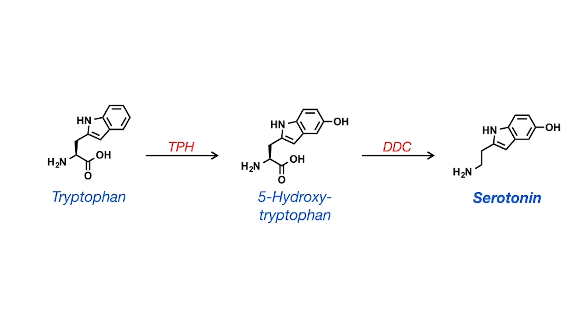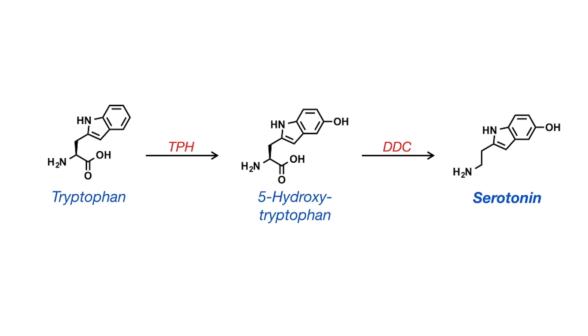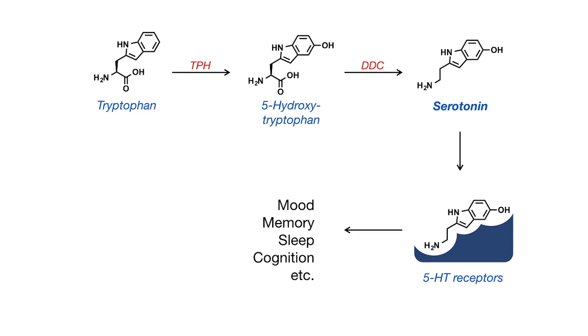So once tryptophan is inside your body, it can be transformed by a couple of different enzymes into first this 5-hydroxy tryptophan and then into what's called serotonin. And so this is what people are talking about when they talk about tryptophan having these effects because serotonin can bind to what are called 5-HT receptors in your brain. And these control things such as mood, memory, sleep, cognition, a bunch of other things. Sort of the details of that are not actually well understood by neuroscientists.